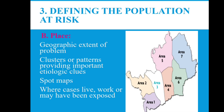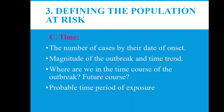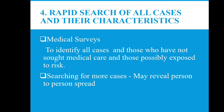Place: shows the geographical extent of the problem. Clusters or patterns provide important etiological clues — maps can show clusters, patterns, and spots where cases may live, work, or have been exposed. Time: analyze the number of cases by date of onset, the magnitude of the outbreak and time trend, where we are in the time course of the outbreak and future course, and the probable time period of exposure.